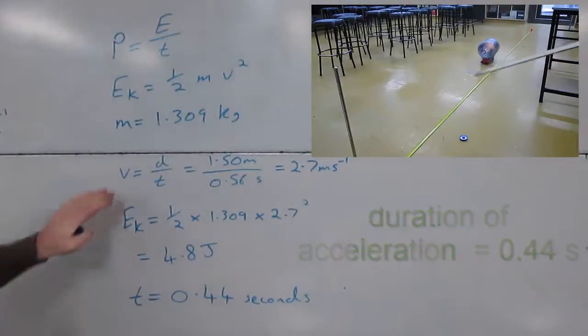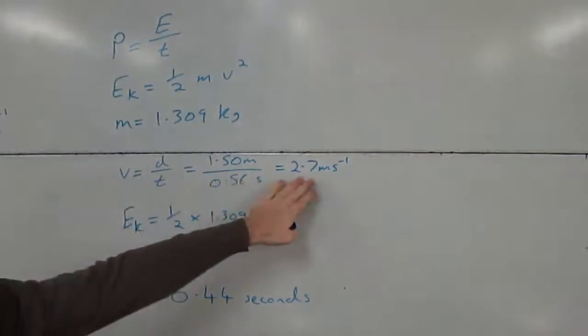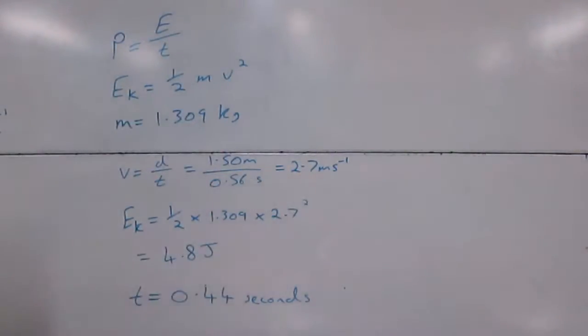So just to recap, this speed, 2.7 meters per second, was the speed that the rocket had reached after it had finished accelerating, so it's top speed if you like. The time over which it accelerated is what we're interested in in working out the power.